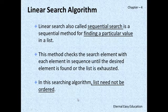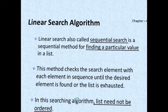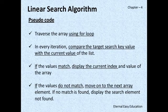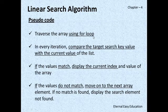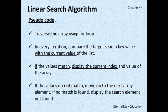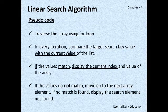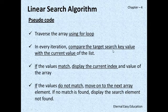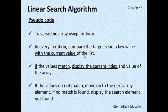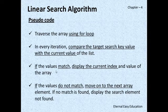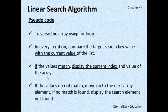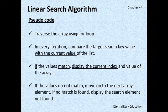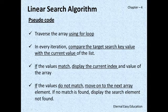So now we are going to learn linear search algorithm. What is the procedure? Pseudo code: Traverse the array using a for loop. We know if there is iteration, we must need a loop—we can use a for loop. In every iteration, compare the target search key value with the current value of the list. If the value matches, display the current index and the value of the array.